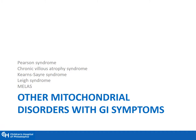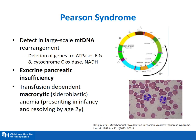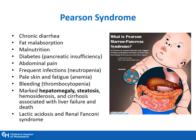Other mitochondrial disorders with GI symptoms include Pearson syndrome — a defect in large-scale mitochondrial DNA that presents with exocrine pancreatic insufficiency and macrocytic anemia. Patients present with chronic diarrhea and fat malabsorption leading to malnutrition. Pancreatic insufficiency leads to diabetes, neutropenia to frequent infections, anemia to pale skin and fatigue, and thrombocytopenia to bleeding. Patients present with marked hepatomegaly and steatosis, as well as cirrhosis, that can eventually lead to liver failure and death. Pearson syndrome is also associated with lactic acidosis and renal Fanconi syndrome.